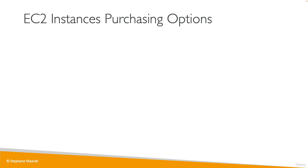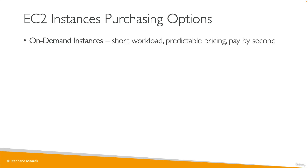Hi and welcome to this lecture on EC2 instances purchasing options. So we've been using on-demand EC2 instances so far. They allow us to run instances on demand — that means they're good for short workloads, we get predictable pricing, and we're going to pay by the second. But if you have different kinds of workloads, you can optimize your discounts and your pricing by specifying it to AWS.